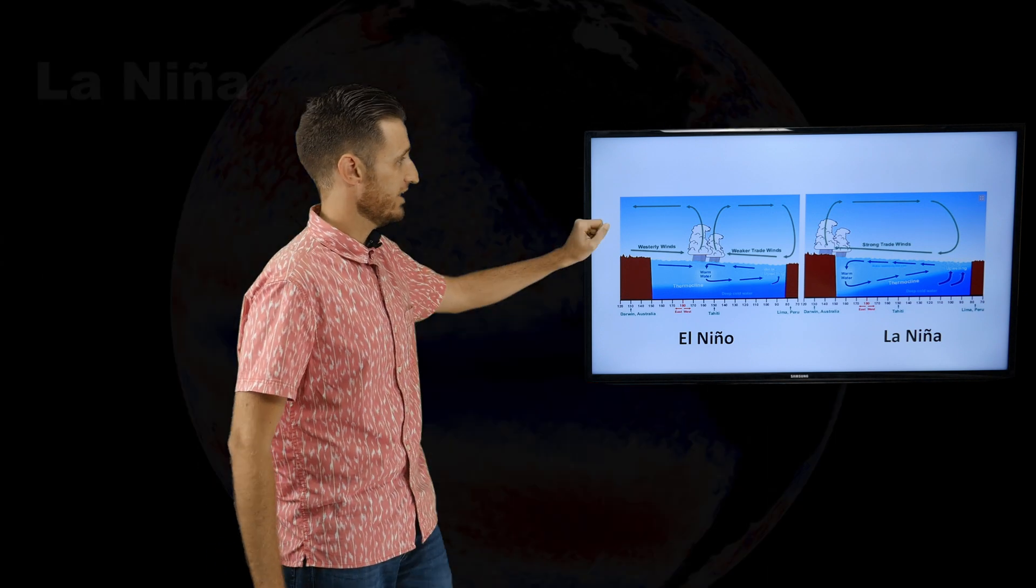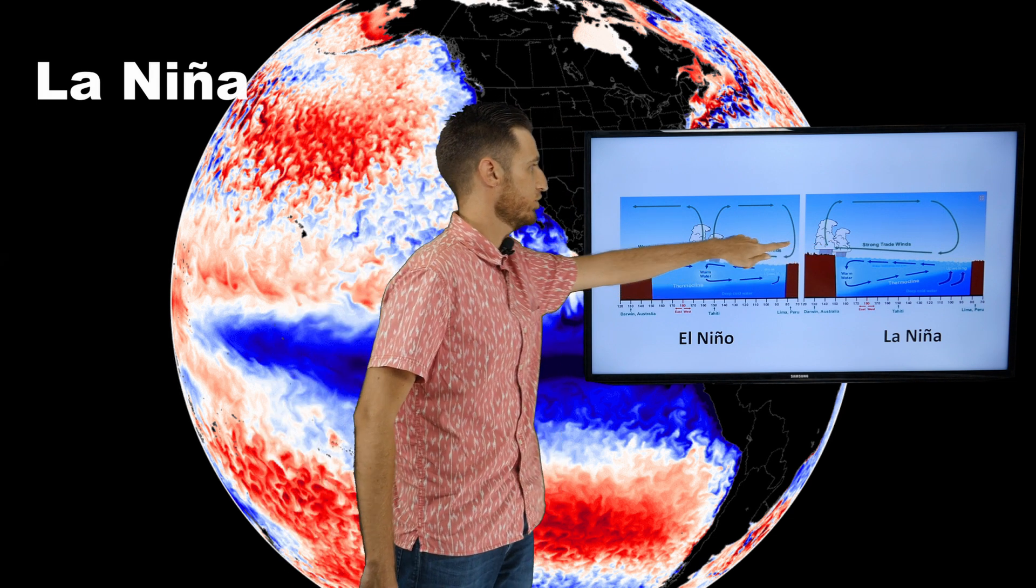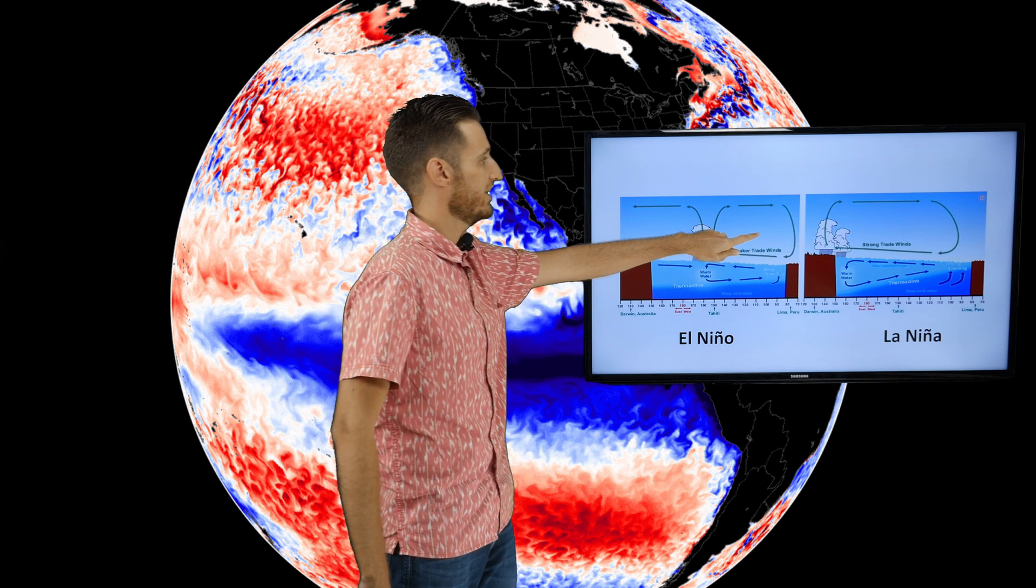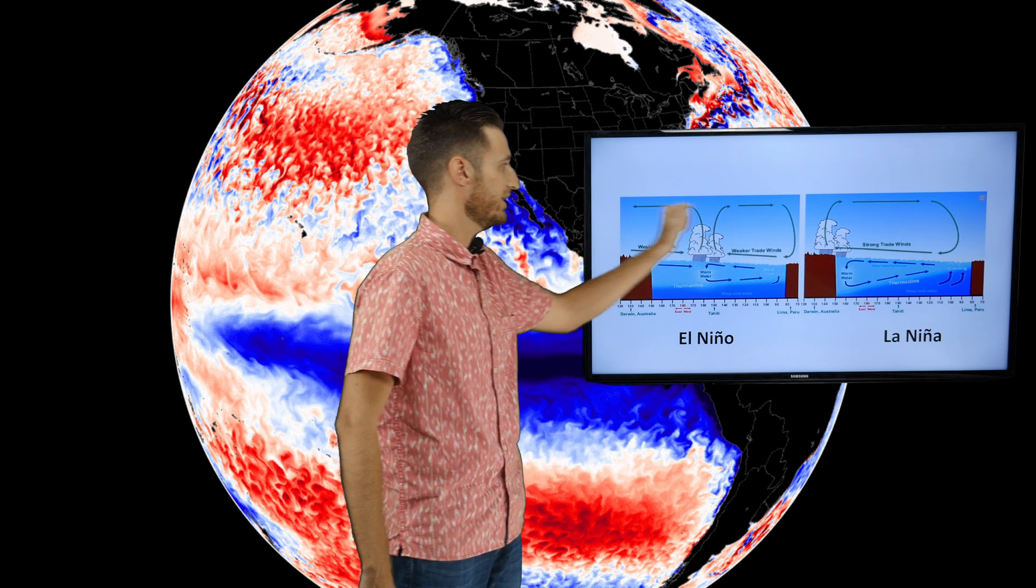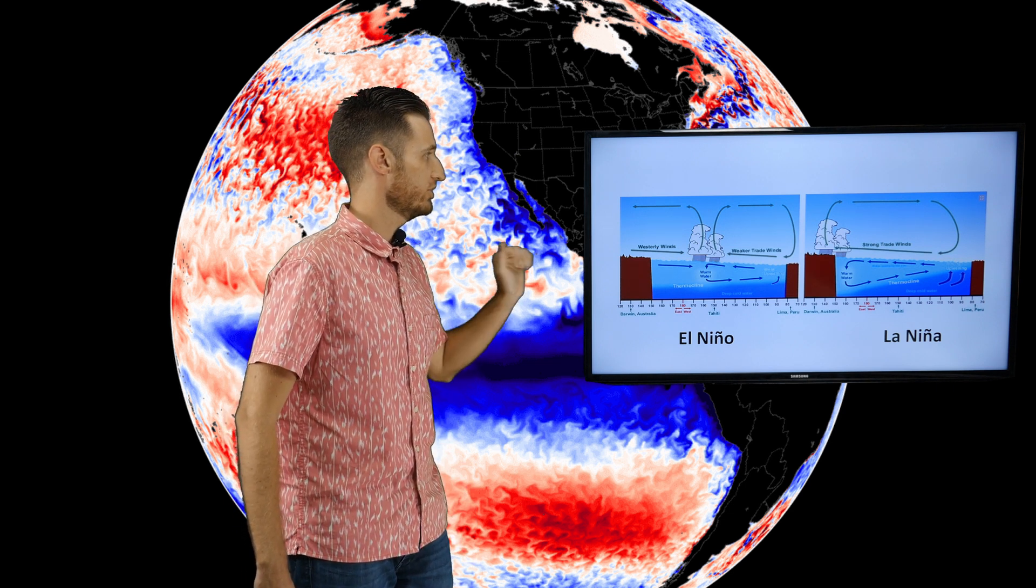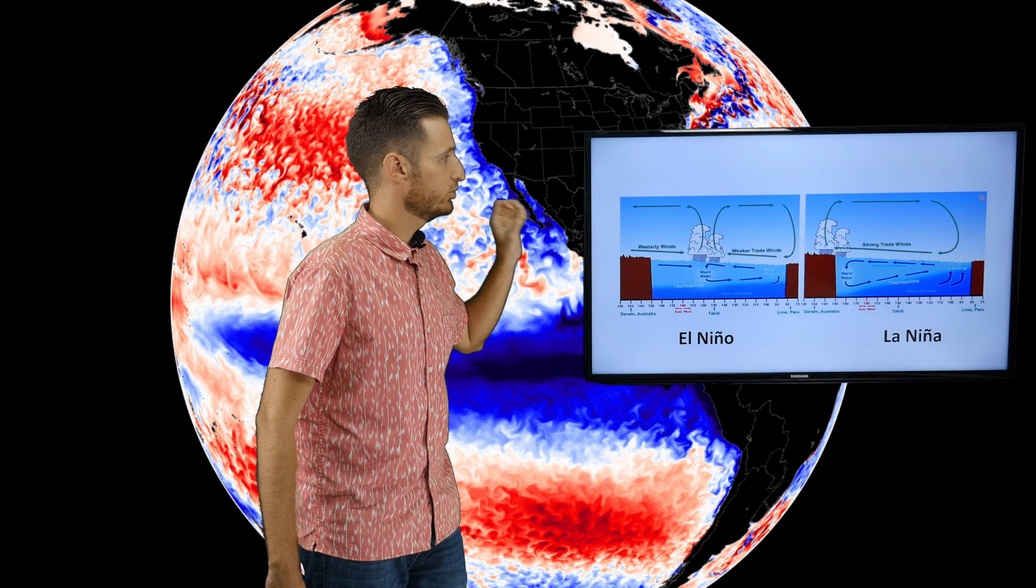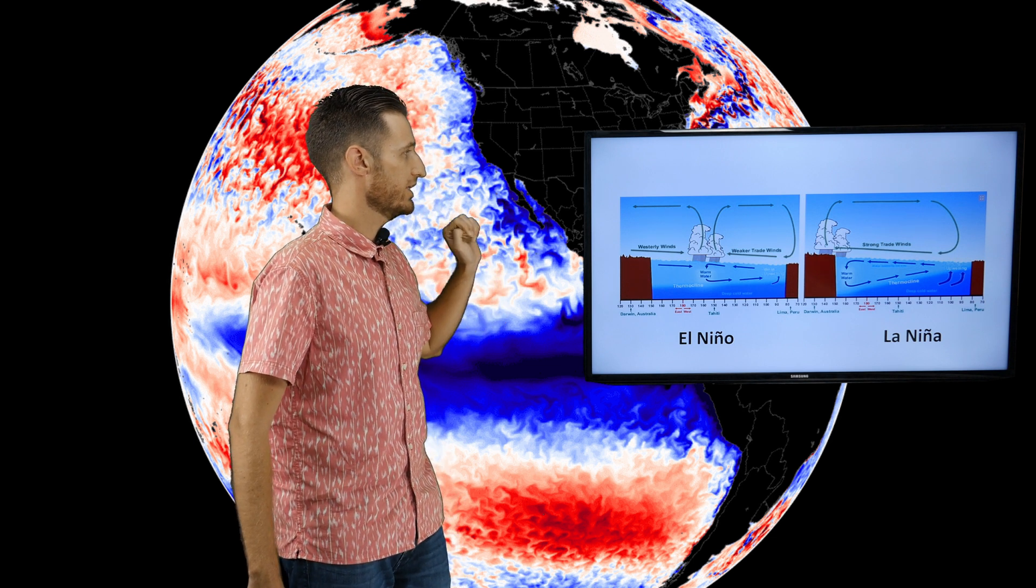As for La Niña, you have the opposite. Then you have the warm waters that are pushed towards the west because of the strong easterly trade winds. And then you have the rains over Australia, the Philippines and also Indonesia. And then you have the colder waters moving towards the eastern Pacific, also to the central Pacific, and then you have dry conditions over Peru, Ecuador and also the area of Chile. So that's basically the difference between those two.